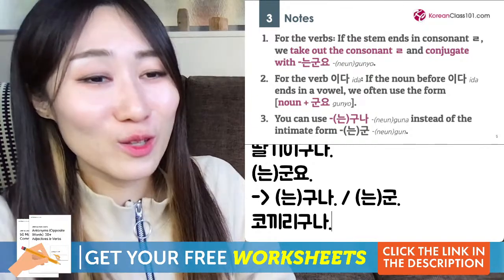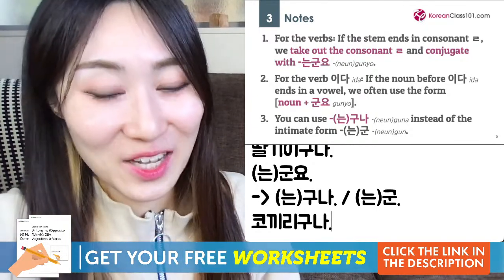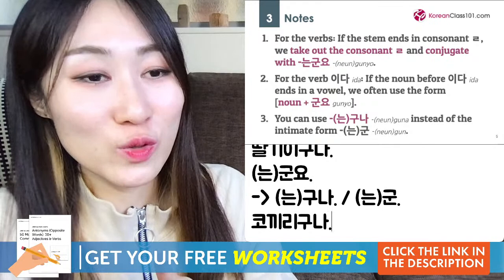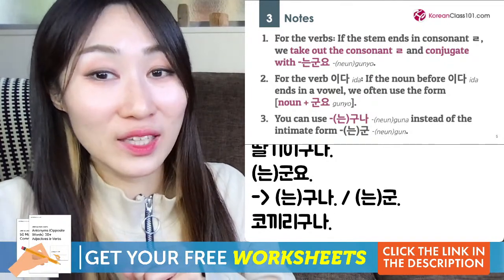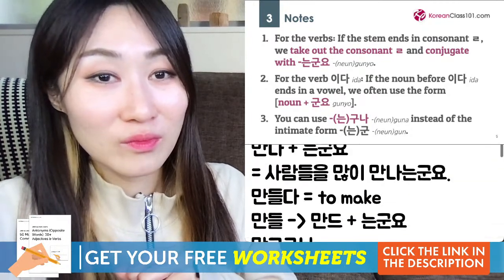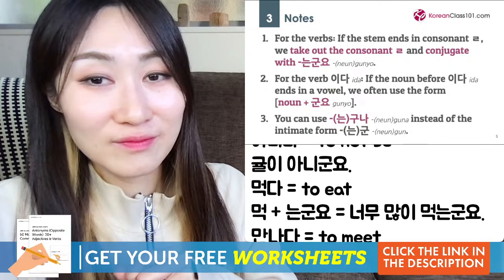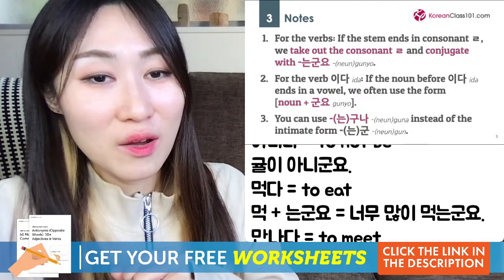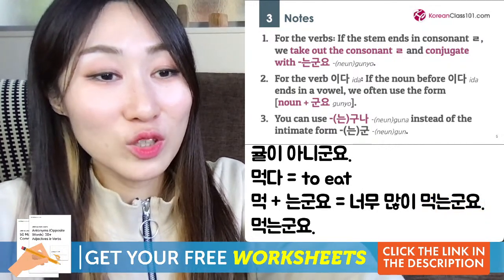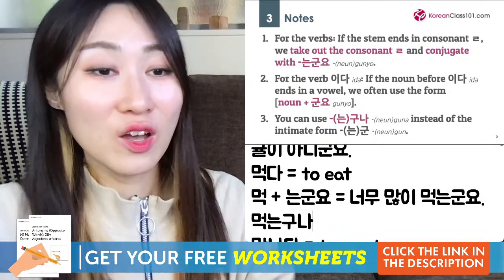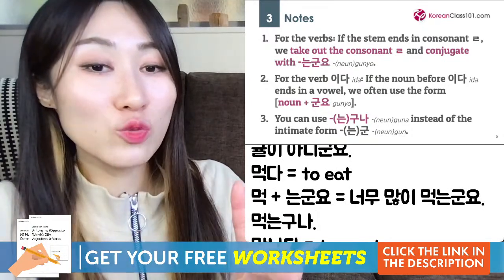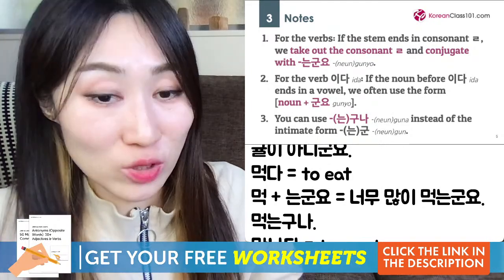To use 구나 with a verb, just replace 군요 with 구나. So 먹는군요 becomes 먹는구나, 많이 먹는구나 — 'oh, you eat a lot' (casually). 딸기군요 or 딸기구나 — both are okay. Just replace 군요 with 구나 to speak casually with friends, people younger than you, or family members.